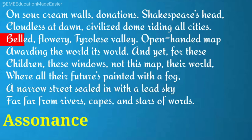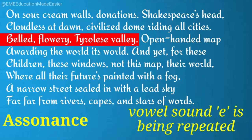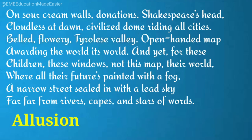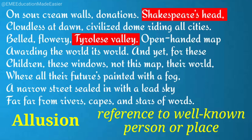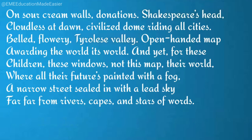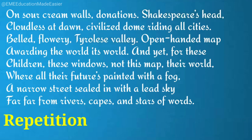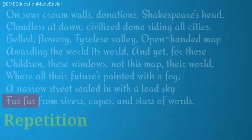Literary devices in stanza two include: metaphor — walls compared to sour cream; metaphor — the children's future described as 'narrow streets sealed with a lead sky'; assonance — 'belled flowery Tyroli's belly' with the E sound repeated; allusion — references to Shakespeare and Tyroli; and repetition of the word 'far.'